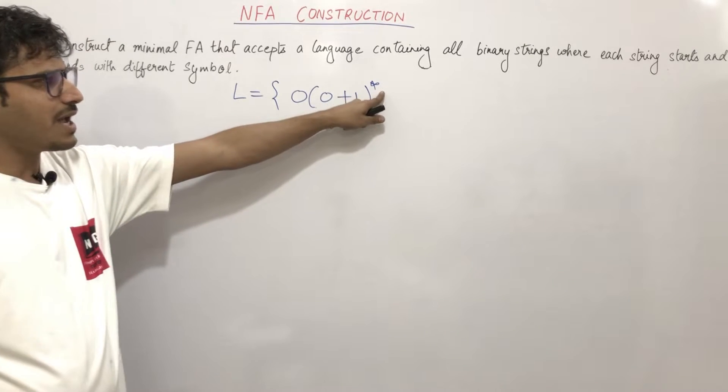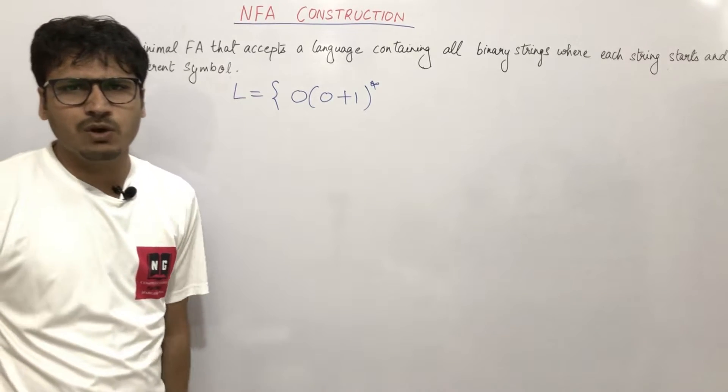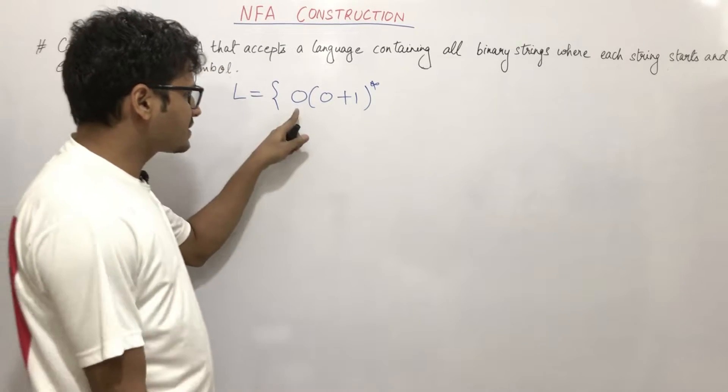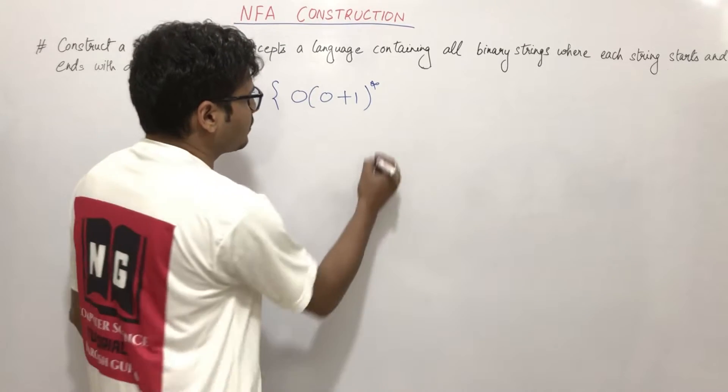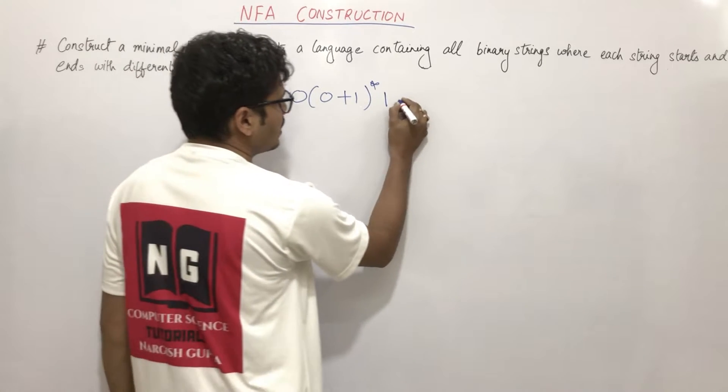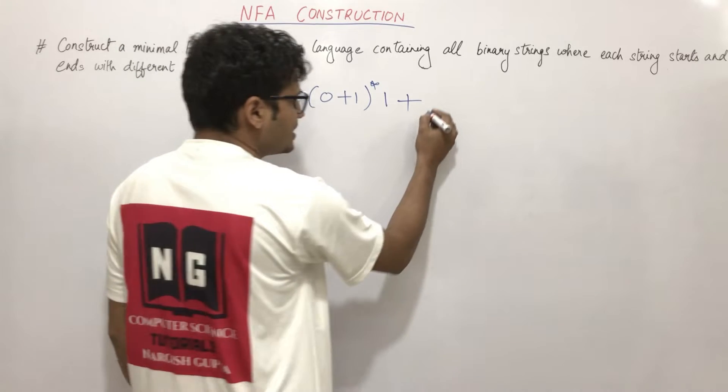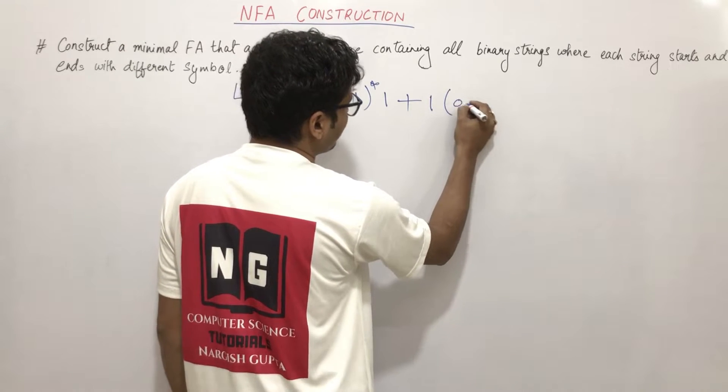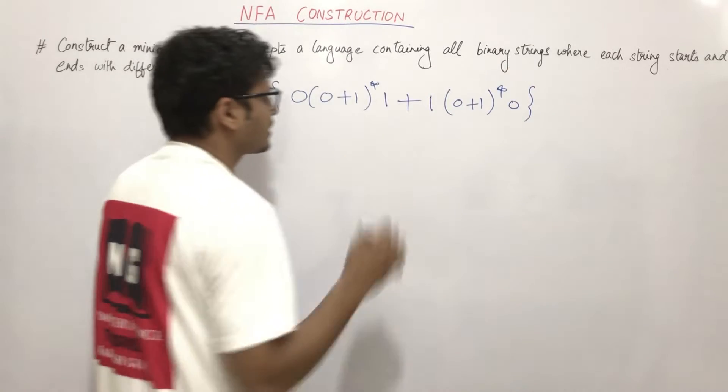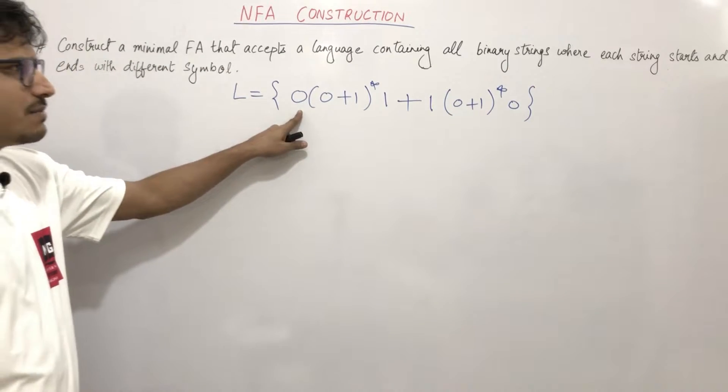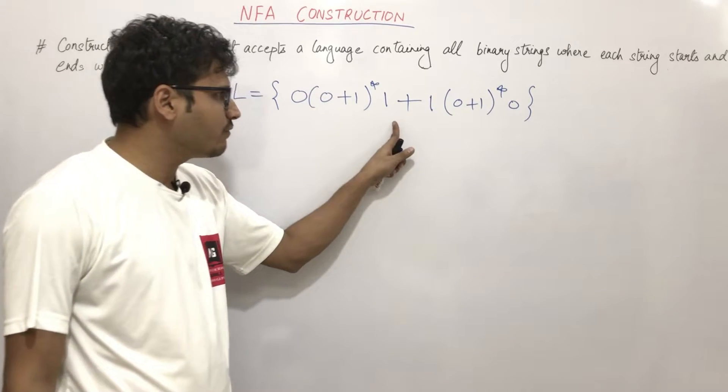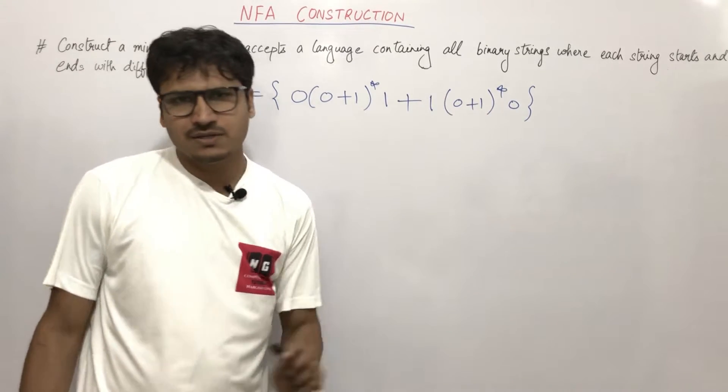Zero or one in any combination - if you start with 0, you can end with 1. That's one possibility. The other possibility is you can start with 1, and any combination of 0 and 1, and you can end with 0. So start and end with different symbols - start with 0 end with 1, or start with 1 end with 0.